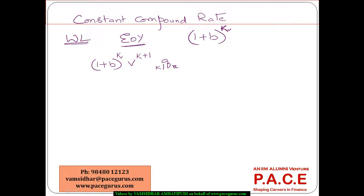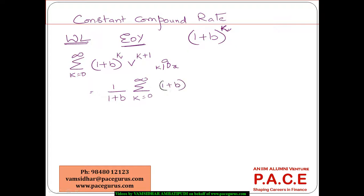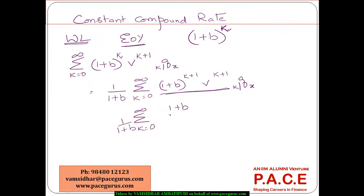The probability of death at duration k is k|q_x. Summing across all values of k gives the expected present value of the benefit. Now I'll factor out 1/(1+b), which allows me to rewrite the expression as (1+b)^{k+1} · v^{k+1} · k|q_x. I can recognize (1+b)·v — that is, (1+b)/(1+i) — as a new discount factor corresponding to a modified interest rate.